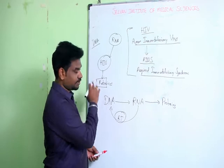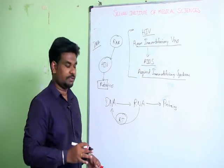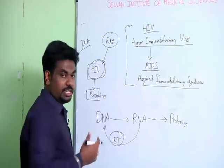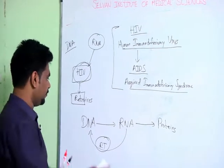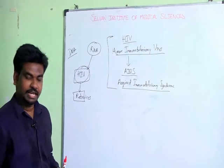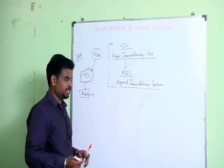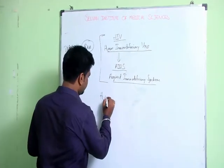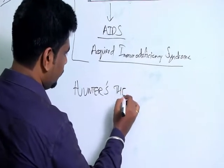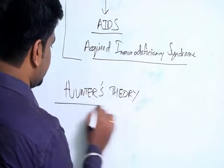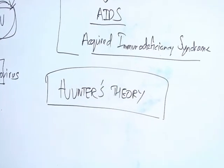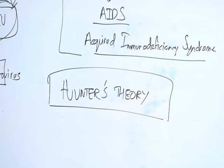The reverse transcriptase is always present with the HIV. Now, where did this HIV originate from? Before going into its replication cycle, we should know about a famous theory called Hunter's Theory, which tells us where HIV originated from.